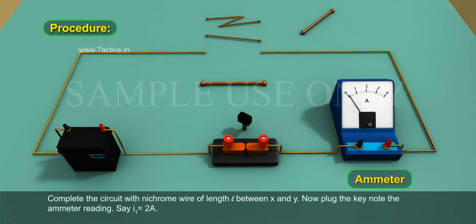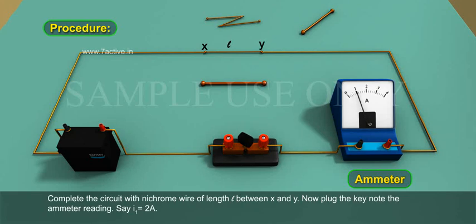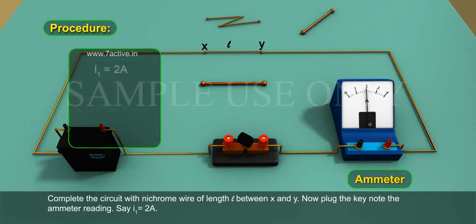Complete the circuit with nichrome wire of length L between X and Y. Now plug the key. Note the ammeter reading. Say I1 is equal to 2A.